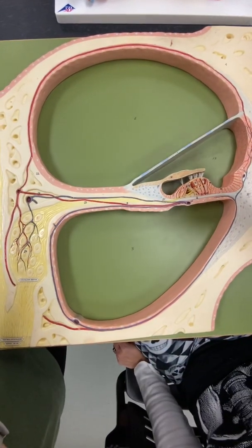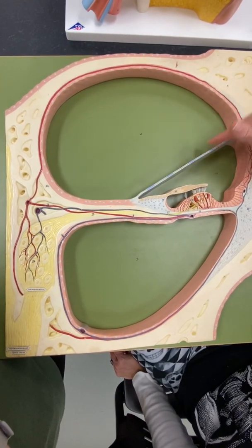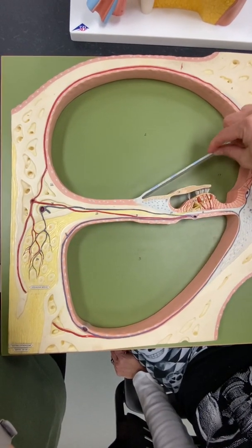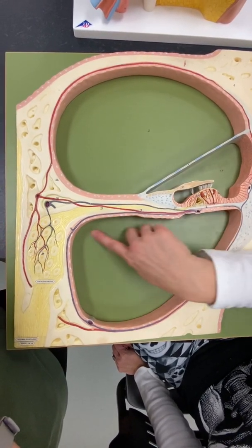Then, we have the scala vestibuli, which is the bigger one, which is also the same as that has this membrane right here, which we'll talk about in a minute. And then, we have the scala tympani, which is the smaller one.